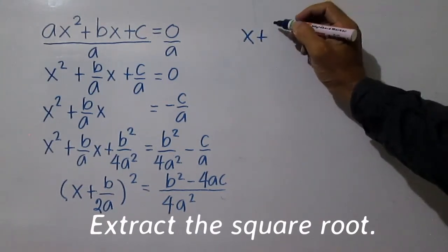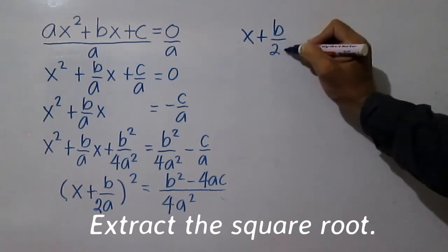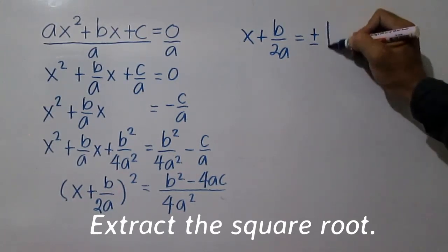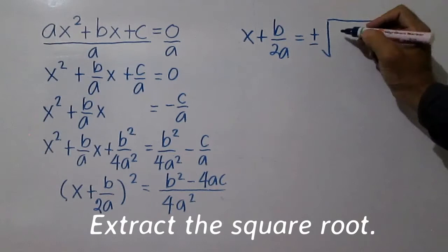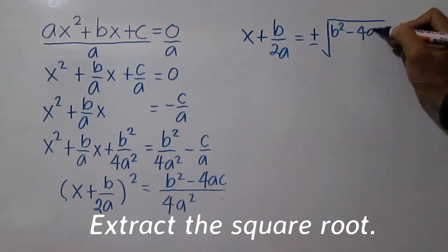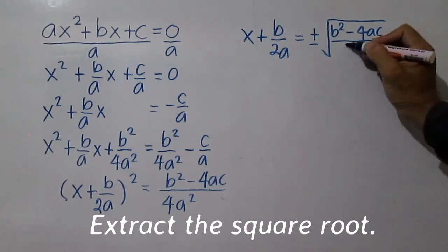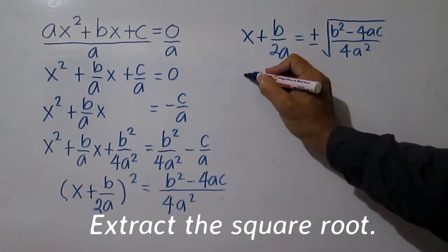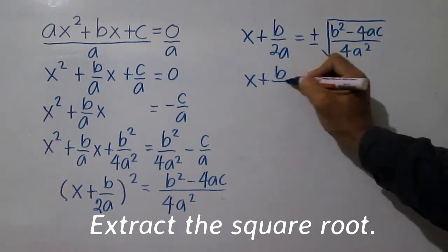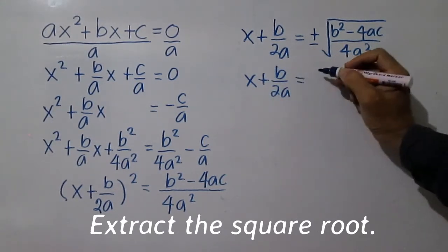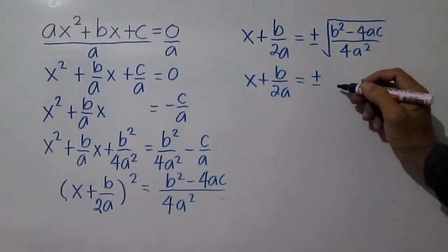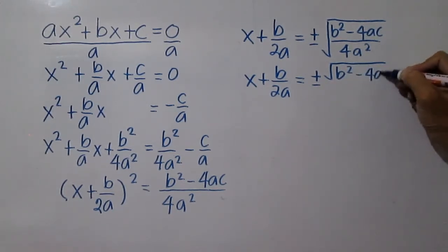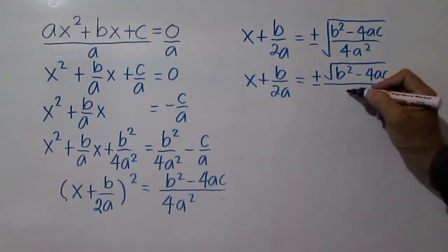Extract the square root. x plus b over 2a equals plus or minus the square root of b squared minus 4ac over 4a squared. Since the square root of 4a squared is 2a, this becomes: x plus b over 2a equals plus or minus the square root of b squared minus 4ac, all over 2a.